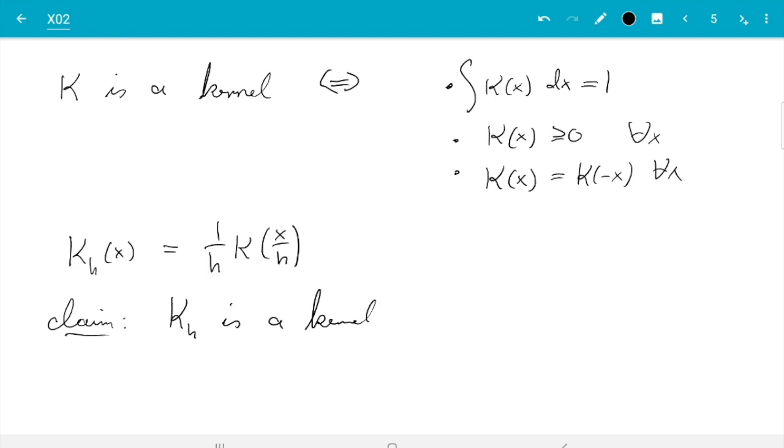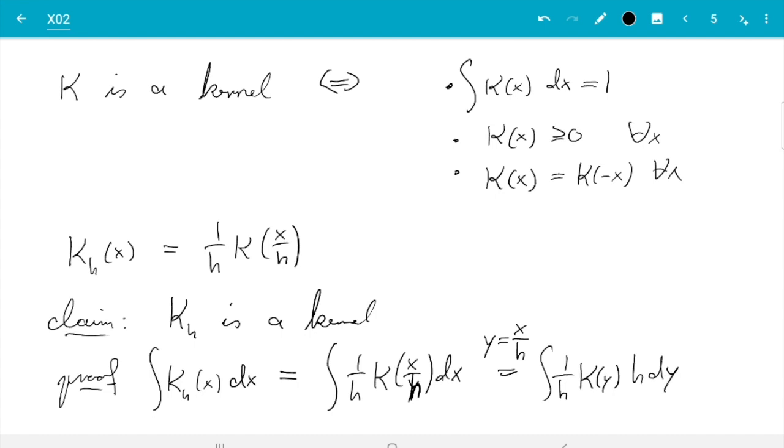And I want to show you that it is also a kernel. Claim: kh is a kernel. Proof: the only interesting bit is the integral. So integral kh of x dx is integral 1 over h k of x over h dx. Now we need substitution rule, say y is x over h. So then we have integral 1 over h k of y, and instead of dx we can now write h dy, and that's integral k of y dy, and by this first rule up here that equals 1. And then the second and third rule I would say are clear.